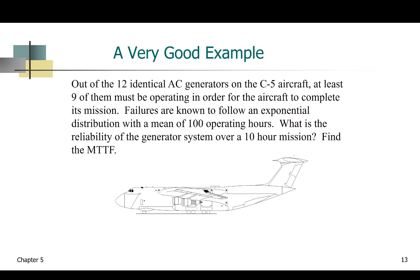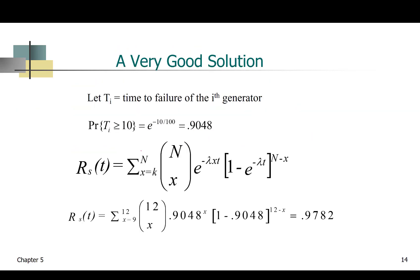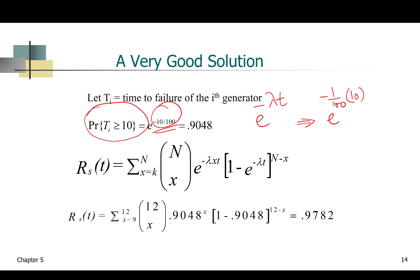Here is an example. Out of 12 identical AC generators on the C-5 aircraft, at least 9 must be operating for the aircraft to complete its mission. Failures follow an exponential distribution with a mean of 100 operating hours, so lambda is 1 over 100. The question asks for the reliability of the generator system over a 10-hour mission and the mean time to failure. The individual component reliability is e to the negative 1 over 100 times 10, which gives 0.905.